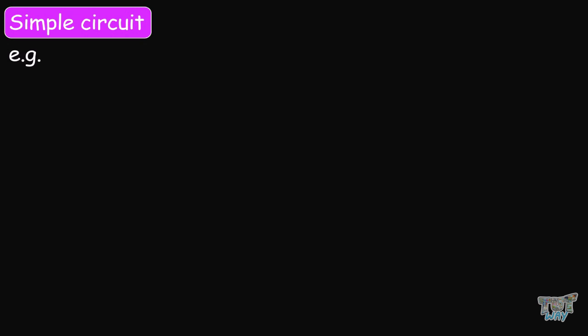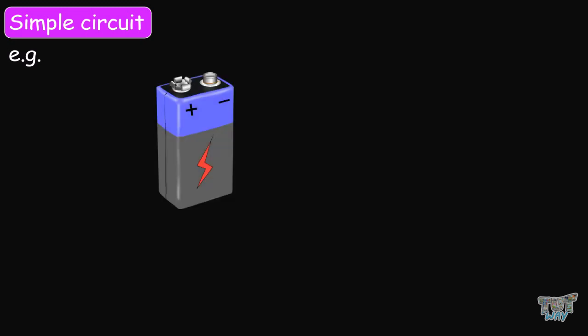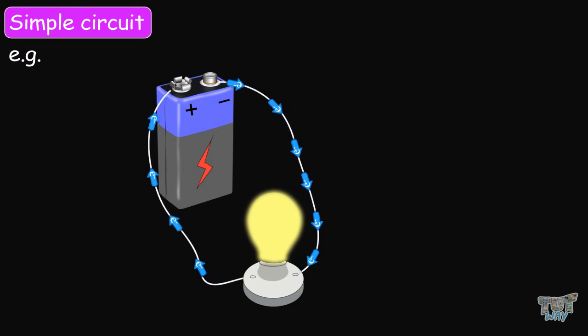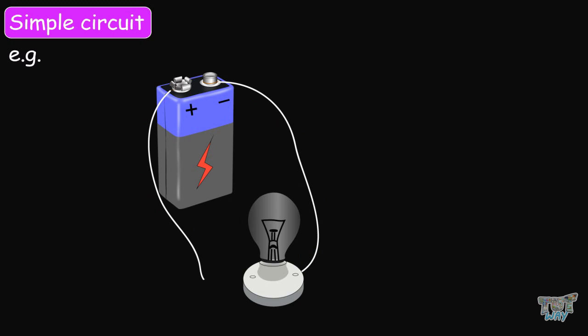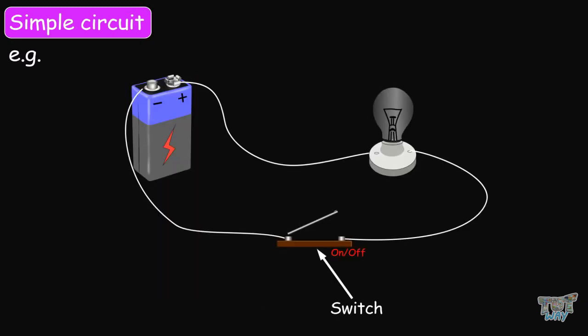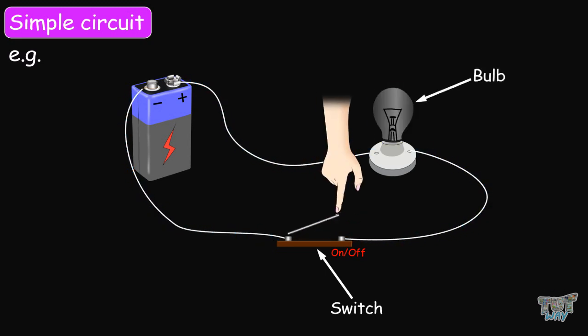Here we have an example of a simple circuit. Let's take a battery and two wires — attach one wire to each end of the battery and attach both wires to an electric bulb. The electric bulb glows as the electrons move from the negative end to the positive end of the battery and the circuit is complete. Now if you break any part of the circuit, the bulb will go off. Remove the wire from here — the bulb goes off. Remove the wire from here — the bulb goes off again. The breaking of the circuit can be done with an electrical switch. If you turn on the switch, the bulb glows; if you turn off the switch, the bulb goes off.